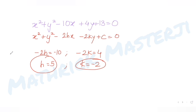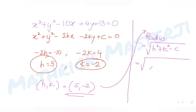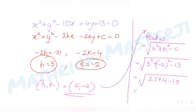The radius of this given circle is √(h² + k² - c) = √(25 + 4 - 13) = √(29 - 13) = √16 = 4. So the radius of the given circle is 4.